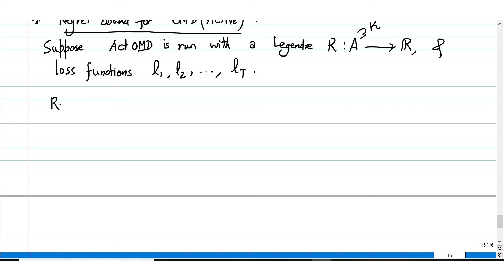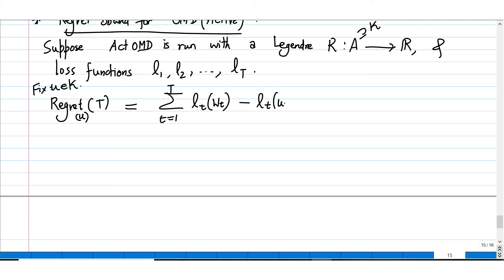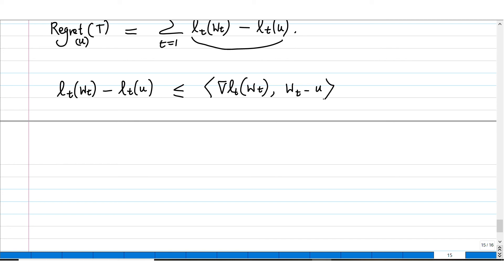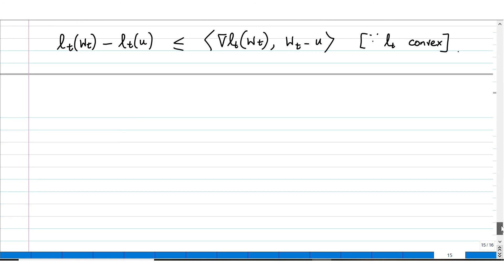These are general loss functions and they will only enter into the bounds through their gradients, pretending as if they are linear functions with the corresponding gradients. Fix some comparator point U in K. The regret of this algorithm with respect to U is defined as Σ_{t=1}^{T} L_t(W_t) − L_t(U). Analyzing each term individually, by convexity of L_t we get L_t(W_t) − L_t(U) ≤ ∇L_t(W_t) · (W_t − U). This is the standard linearization reduction.